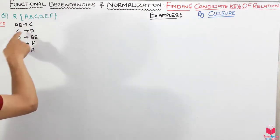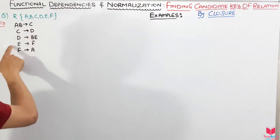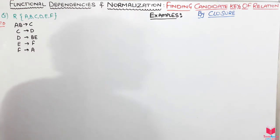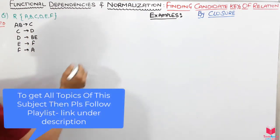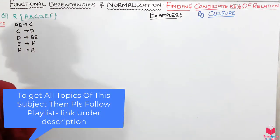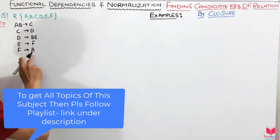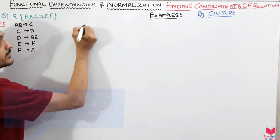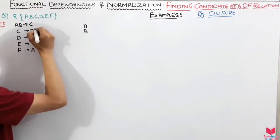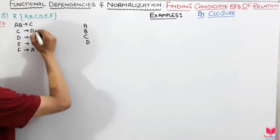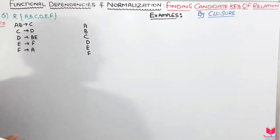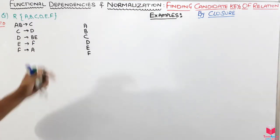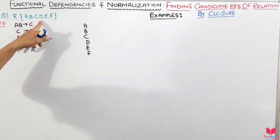The functional dependencies are: AB→C, C→D, D→BE, E→F, and F→A. As I taught you last time, we write all the right-hand side attributes in the right-hand side column alphabetically: A exists, B exists, C exists, D exists, E exists, and F exists.